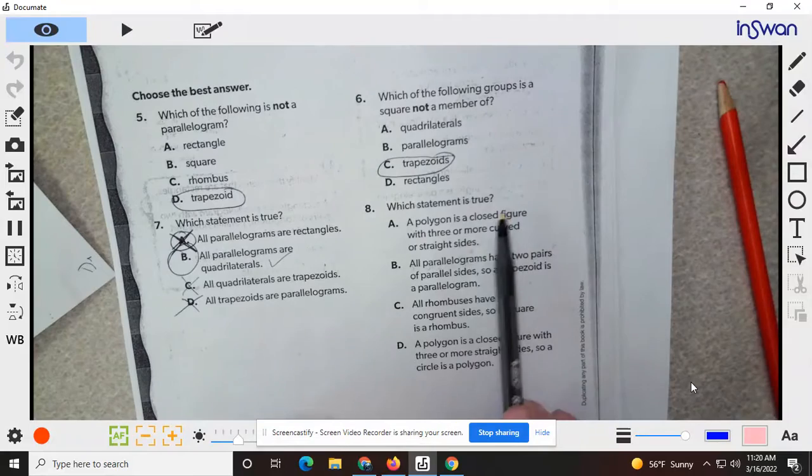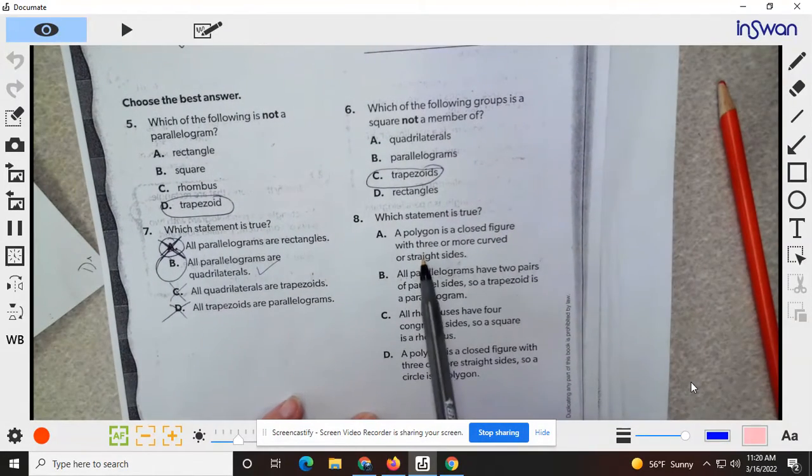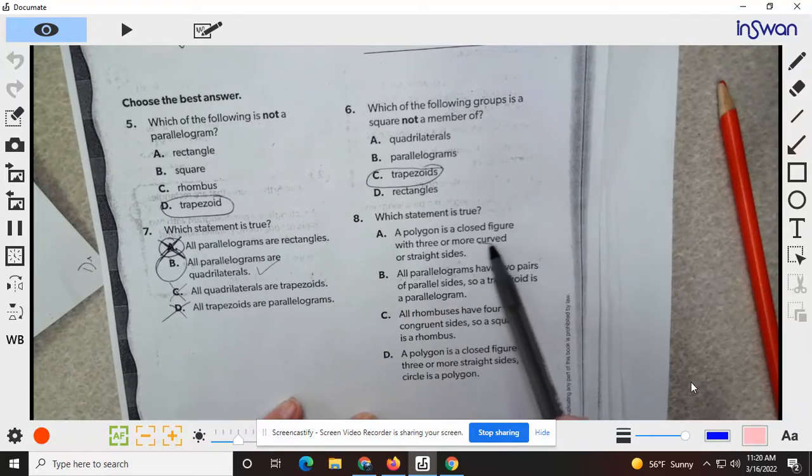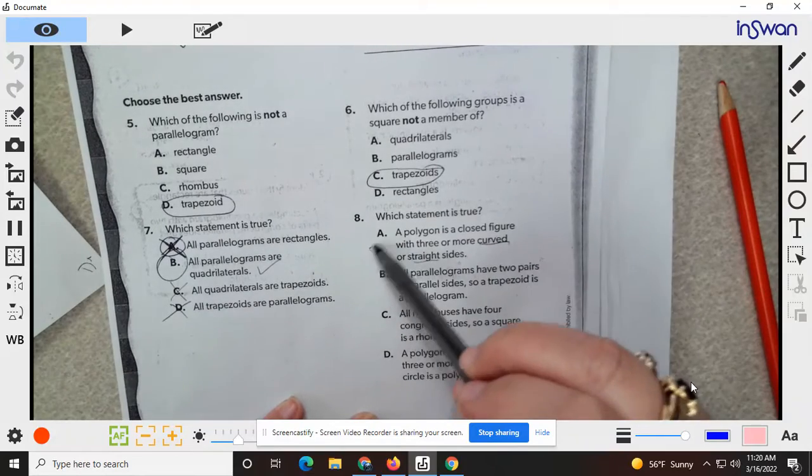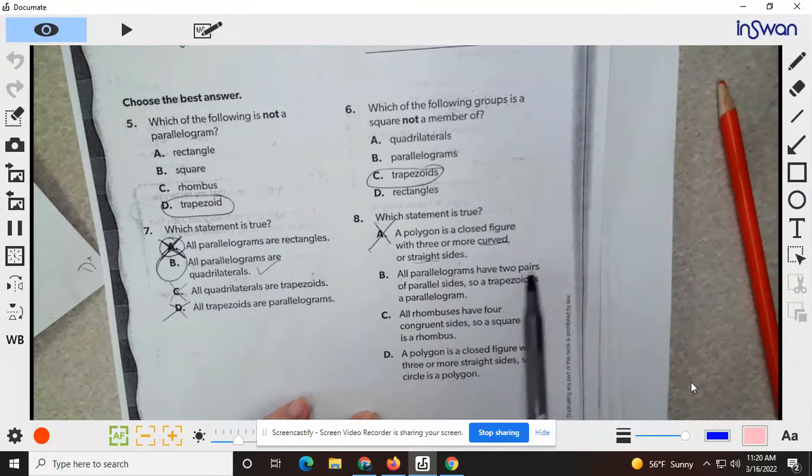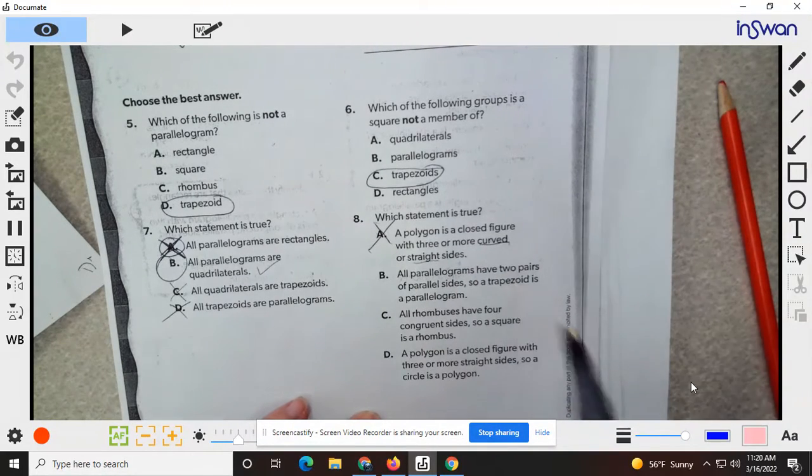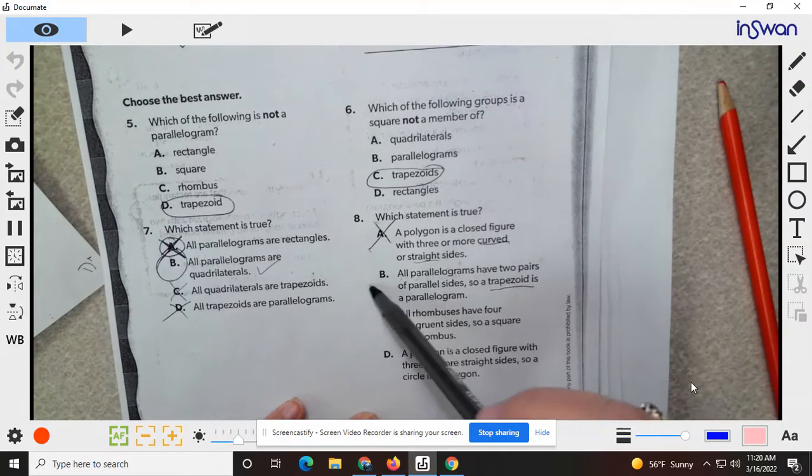Which statement is true? A polygon is a closed figure with three or more curved or straight lines. Or no, they have to be straight. All parallelograms have two pairs of parallel sides. So a trapezoid is a parallelogram. Trapezoids have one set, so no.